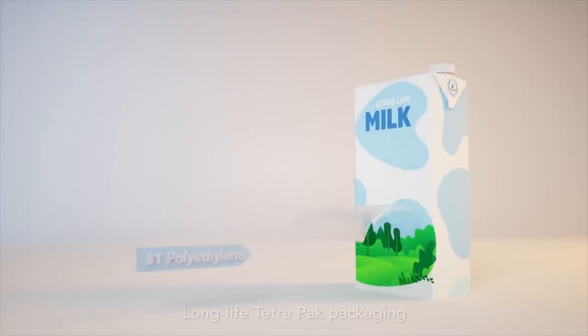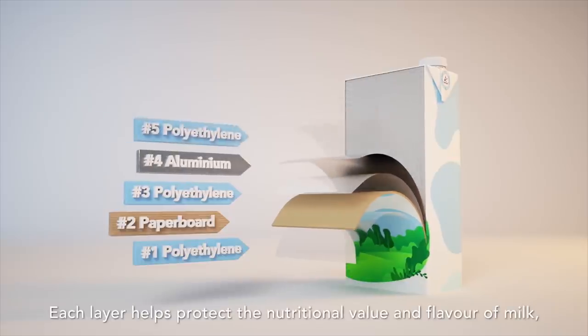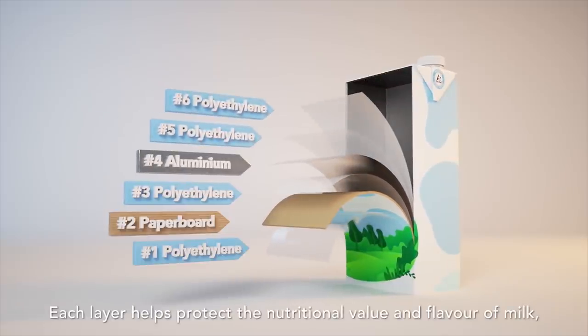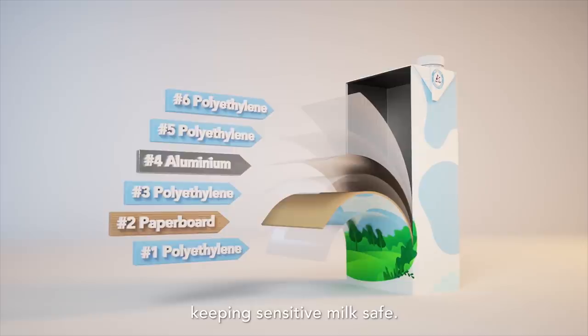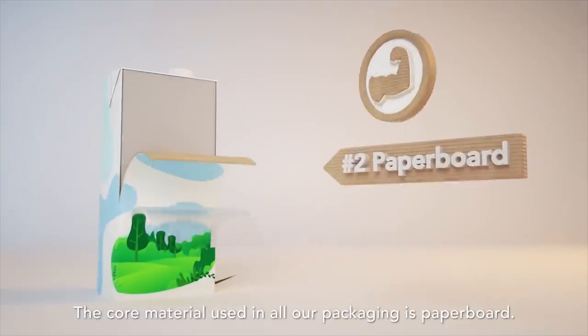Long life Tetra Pak packaging has six different protective layers. Each layer helps protect the nutritional value and flavour of milk, keeping sensitive milk safe. The core material used in all our packaging is paperboard.